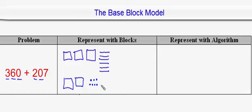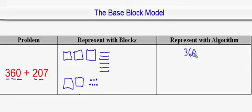Because I am to add them together and they have the same sign, there's nothing to do here besides just add up the total of what you have. Since I have less than 10 units, less than 10 rods, and less than 10 flats, there's no regrouping that needs to be done. So to represent this with the algorithm, I'm going to write the problem down: 360 plus 207.